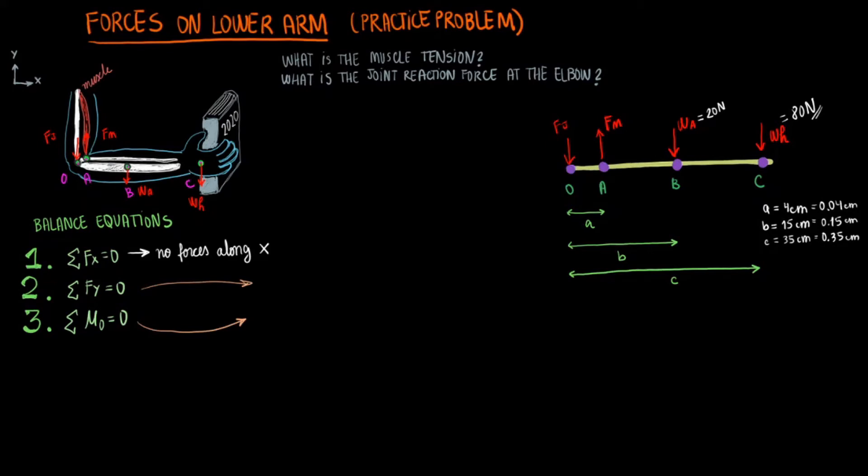Being mindful of signs for the forces, the second equation with the vertical forces will be Fm minus Fj plus Wa plus Wh equals 0. The third equation will have the moment balance with forces times moment arms. We will have negative Fj times 0, which is just 0, plus Fm times A minus Wa times B minus Wh times C equals 0.